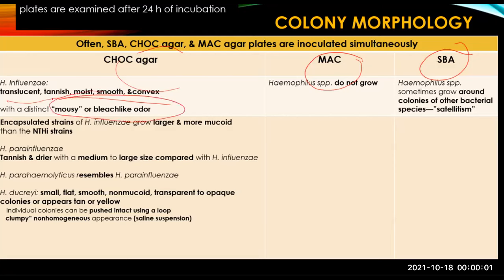Haemophilus species sometimes grow on SBA plates around colonies of other bacterial species — a phenomenon known as satellitism. On chocolate agar, H. parainfluenzae colonies appear tannish and drier, with medium to large size compared with H. influenzae. H. parahemolyticus resembles H. parainfluenzae on chocolate agar; however, when grown on horse or rabbit blood agar, it is beta-hemolytic, whereas H. influenzae is non-hemolytic.